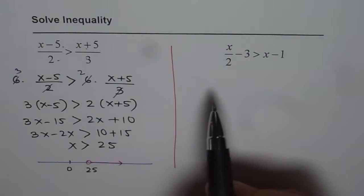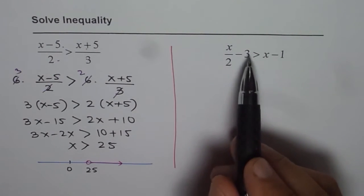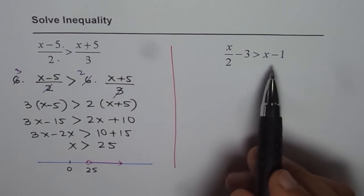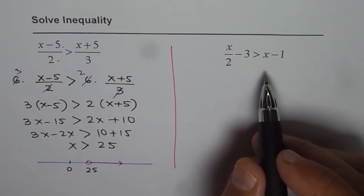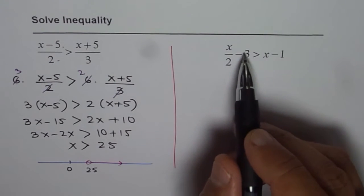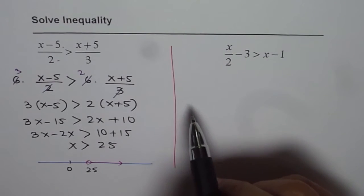Now again, we will follow the same method, x over 2. So what we have here is a fraction again. So you can multiply everything by 2, but this is very simple. So doing that may not be advisable. So what we will do in this case is we'll take the numbers together and the variables on the left side and then solve.